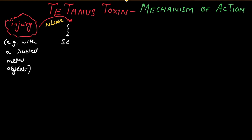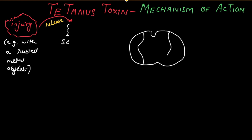There is a spinal cord — a section of the spinal cord — with the central gray matter and the peripheral white matter, and the central canal. Close to the spinal cord is a muscle belly — the belly of a muscle. This could be any muscle like biceps, triceps, quadriceps femoris, gastrocnemius, soleus — any muscle.